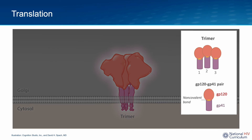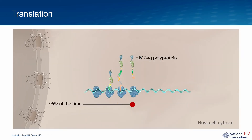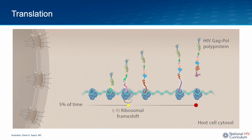Each trimer consists of GP120-GP41 pairs, with each GP120 bound to GP41 by a non-covalent bond. The full-length unspliced mRNA transcripts are translated into large GAG and GAG-POL polyproteins. About 95% of the time, only part of this unspliced mRNA is translated, generating the HIV GAG polyprotein. But about 5% of the time, after most of the way through translating the GAG polyprotein, the ribosome slips back one nucleotide — a minus-one ribosomal frameshift — which resets the reading frame and generates the very large GAG-POL polyprotein. Overall, about 20 GAG polyproteins are formed for every one GAG-POL polyprotein.